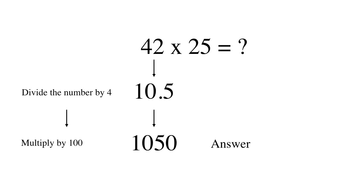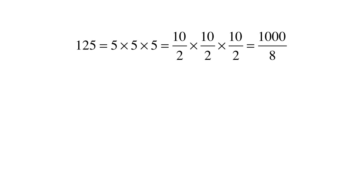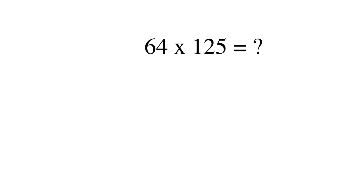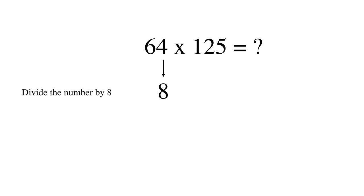We can now move to 125. 125 is the cube of 5 and can be viewed as 1000 upon 8. So if we have to multiply a number by 125, we can divide it by 8 and multiply the result by 1000. Say we had to evaluate 64 times 125. In the first step, we divide 64 by 8, which gives 8. In the next step, we multiply 8 by 1000 and get 8000.